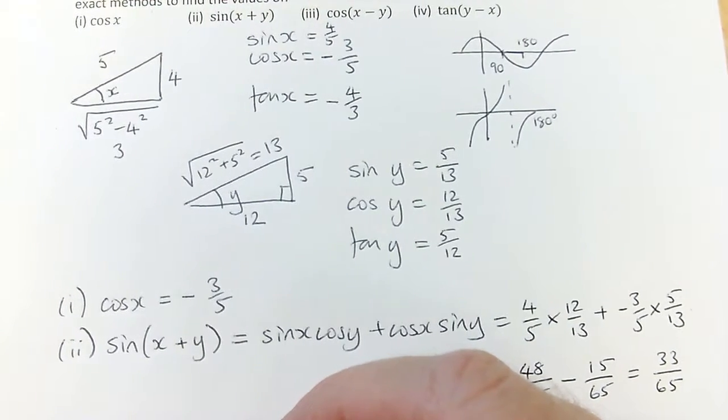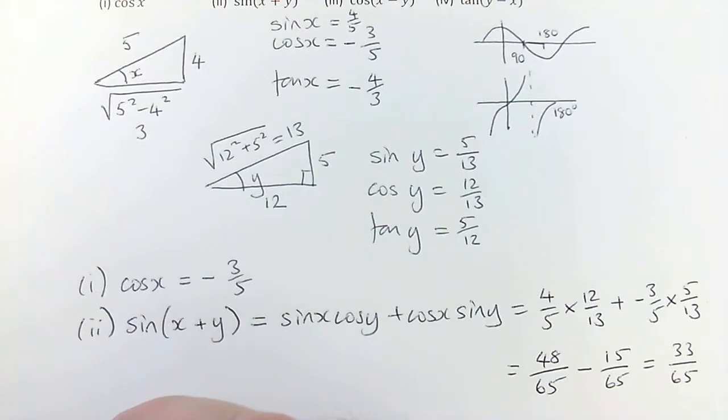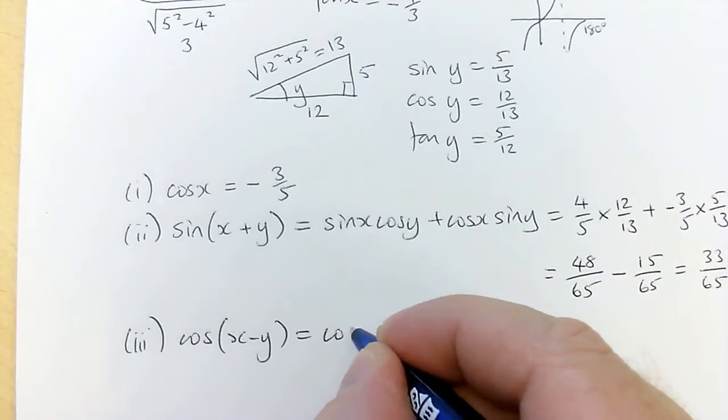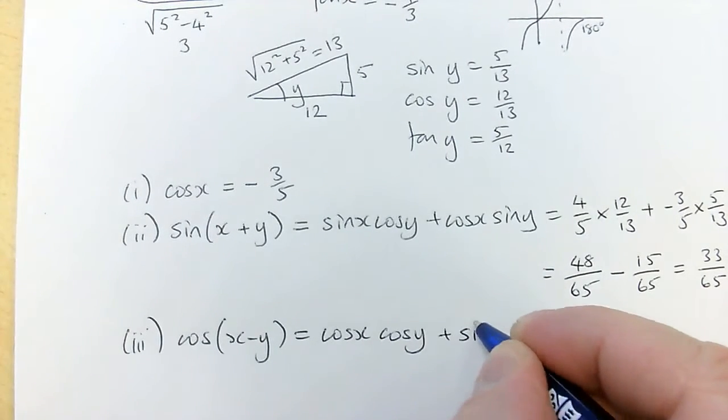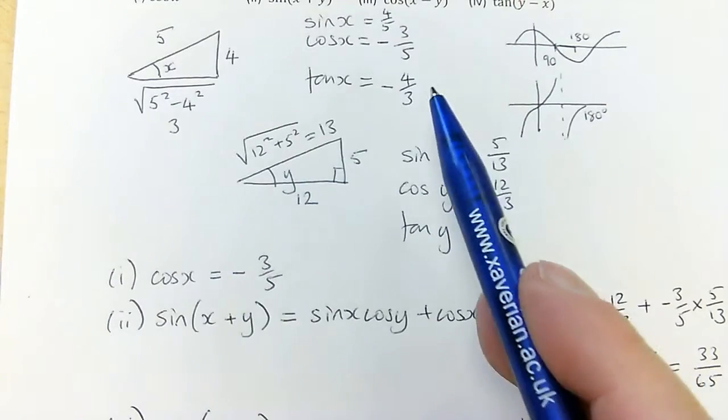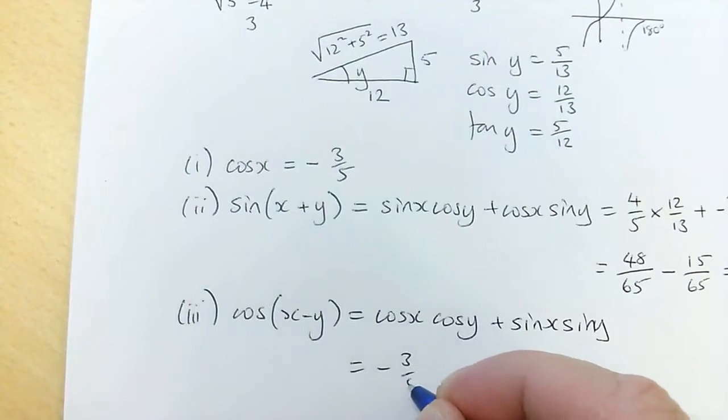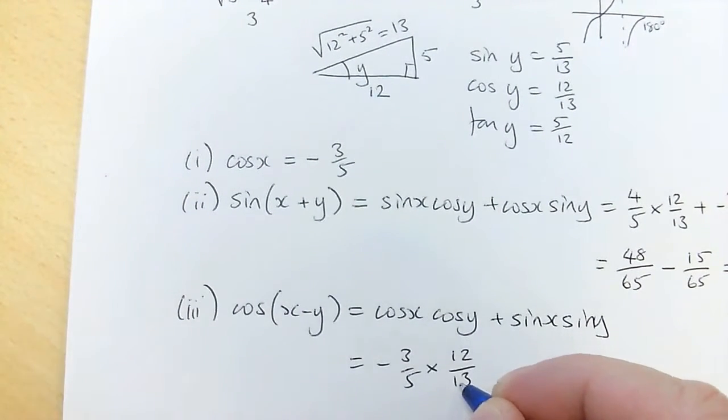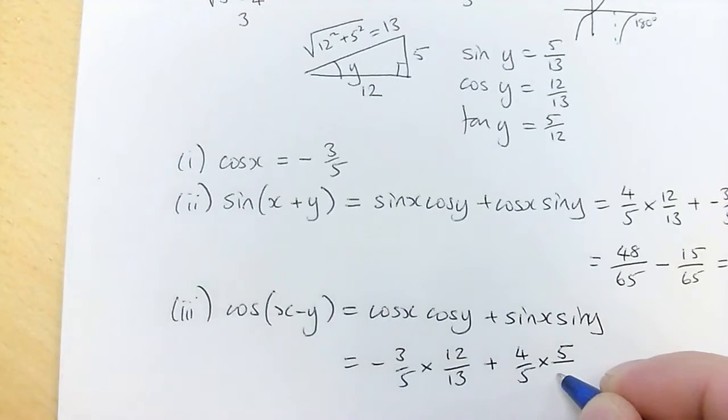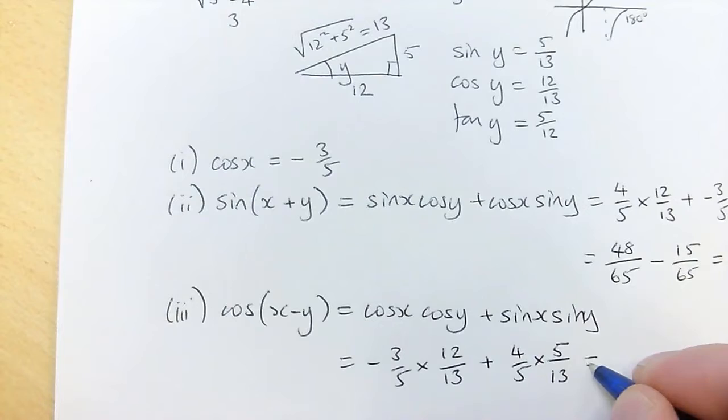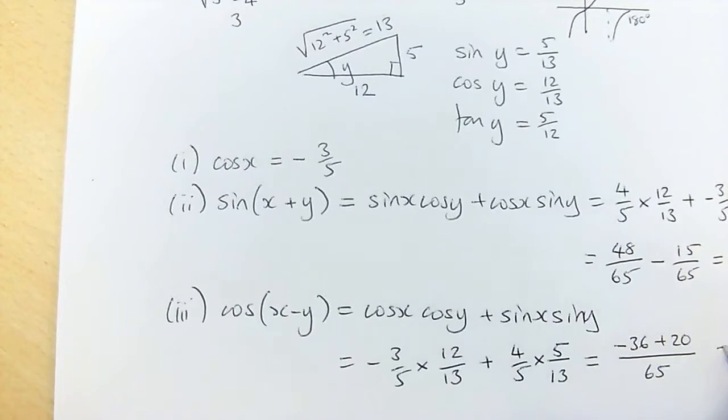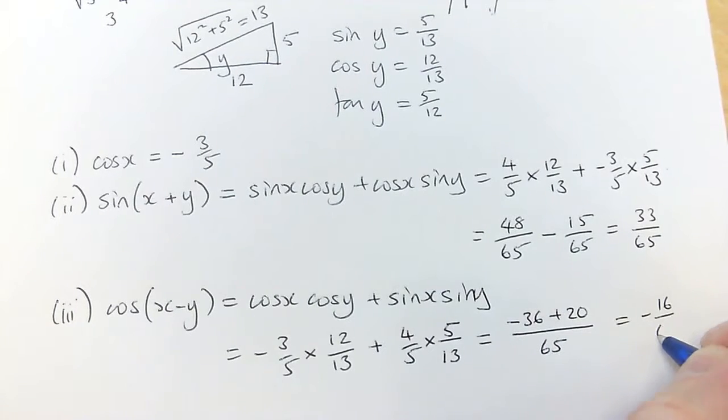It's cos a cos b plus sin a sin b. So part three, I've got cos of x minus y equals cos x cos y plus sin x sin y. So I just have to multiply things together. I have to do the cos times the cos. That's minus three, minus three fifths times cos of y was twelve thirteenths. And then, I need to do plus sin of x was four fifths times sin of y, which is five thirteenths. Okay, so it's the sixty fifths again. This time, it's minus thirty six sixty fifths plus twenty sixty fifths, which is going to be minus sixteen sixty fifths.